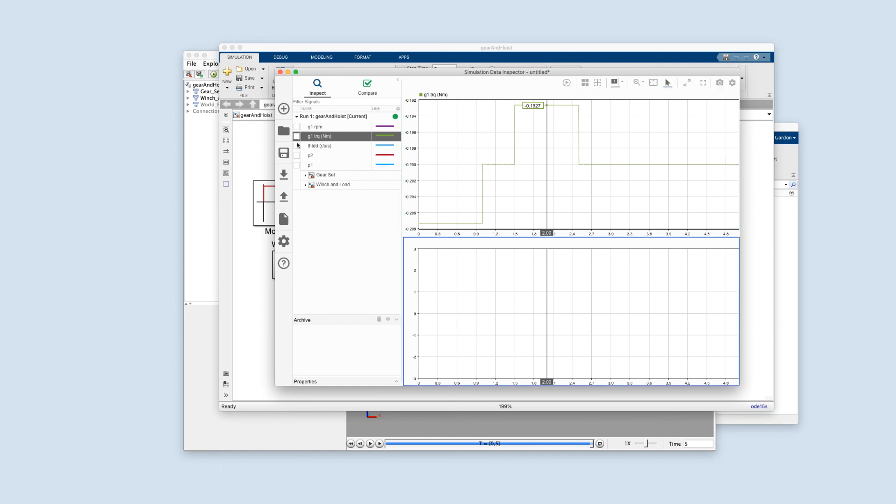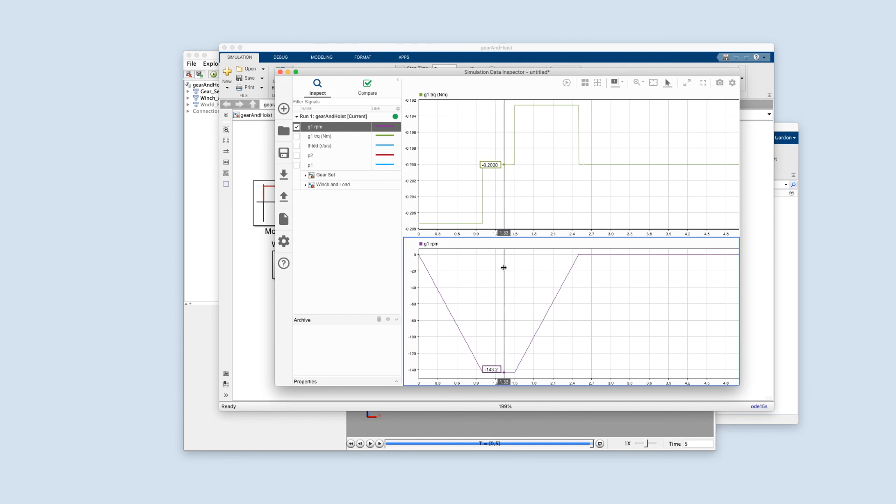Now let's have a look at the gear speed. That's also usually an important thing for motors. So down here we have the max speed is 143.2 RPM. Now what this design tells me is that a gear ratio of five is probably too small. Your typical motor can spin up to 3000 RPM or more.